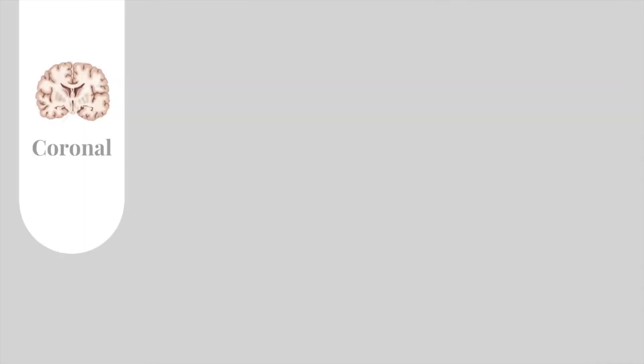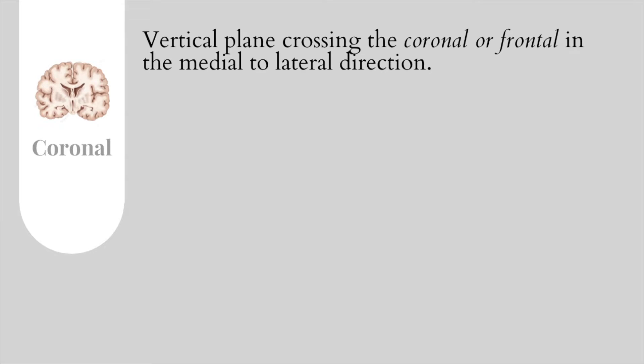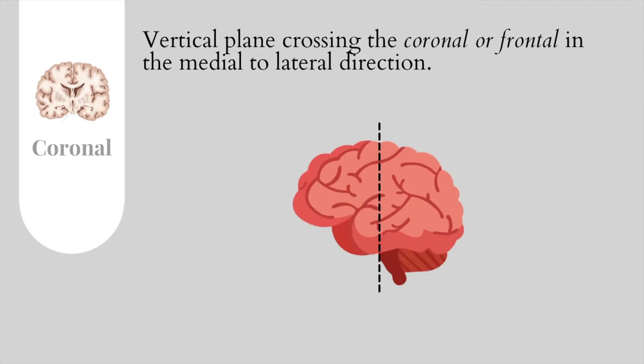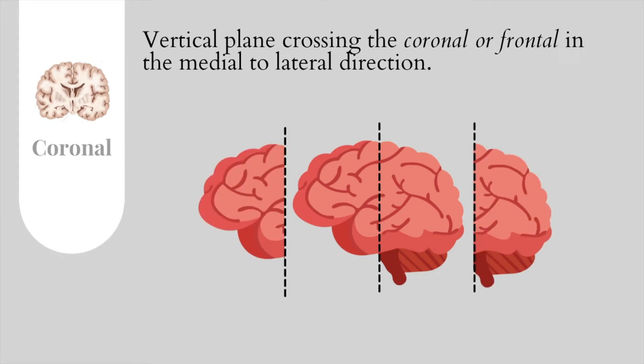Let's start by looking at the coronal section or coronal plane. A coronal section or coronal plane is a vertical plane that crosses the coronal or the frontal plane in the medial to lateral direction. Look at this model of the brain and the axis that runs from the center. This central axis represents the dissection that one would perform to achieve a coronal view of the brain. If we dissect the brain from the top such that it becomes half on the left and half on the right, then the surfaces achieved on both sides are referred to as coronal planes.